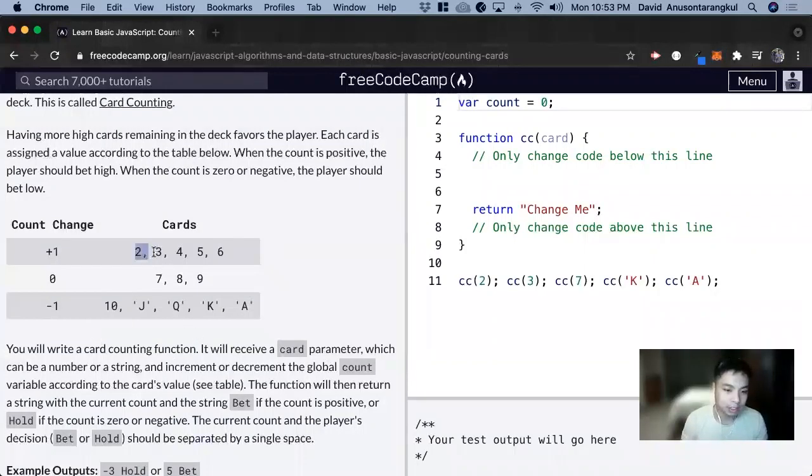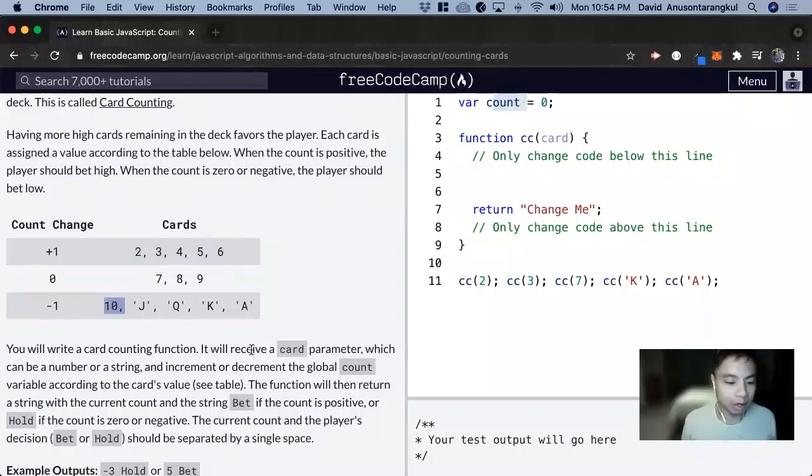And then if it's a 2, 3, 4, 5, 6, we want to increment the count. If it's a 7, 8, 9, it doesn't change. And if it's a 10, Jack, Queen, King or Ace, we want to decrement the count.